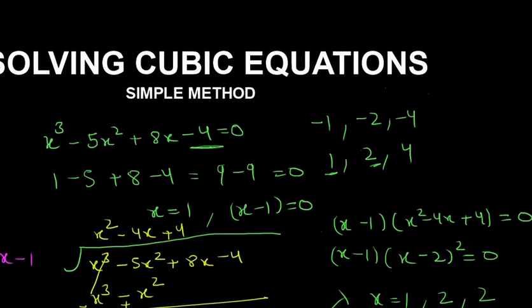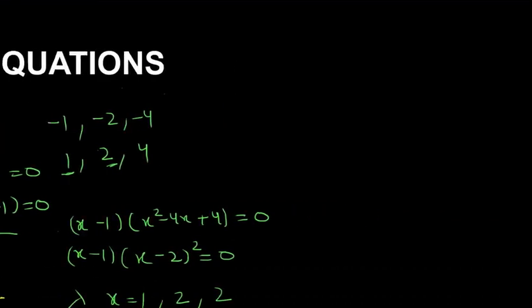Now I will give you a simple cubic equation to solve, which is this one. Take a look at this equation: x³ plus x² minus 21x minus 45 equals 0.